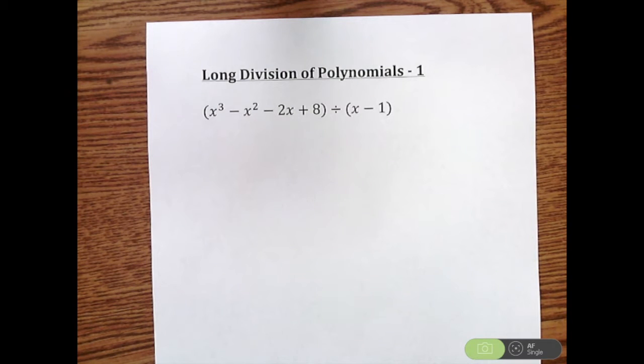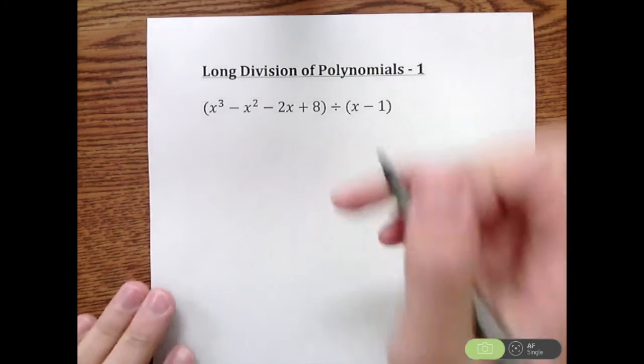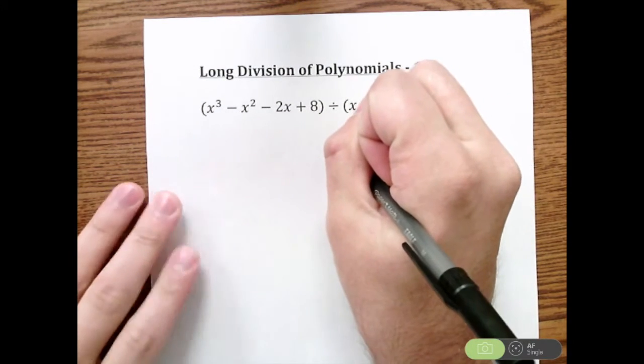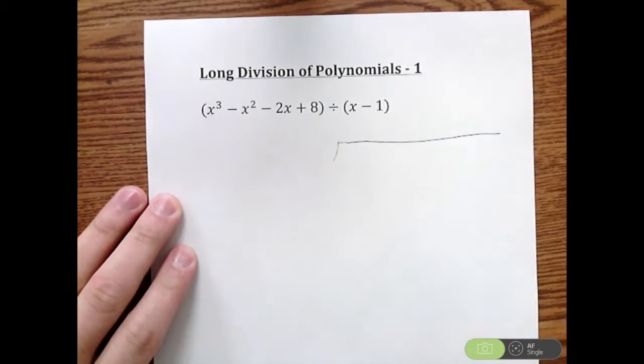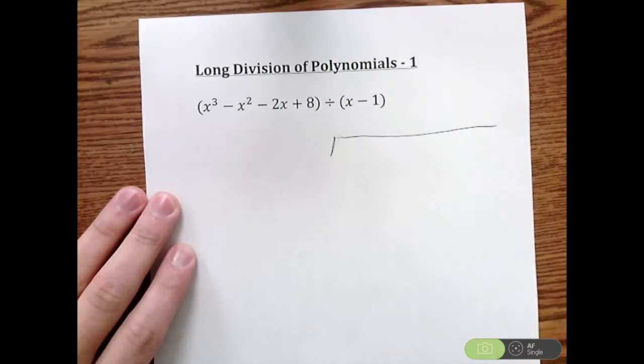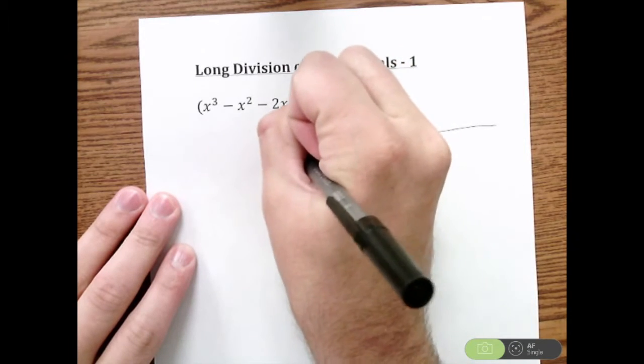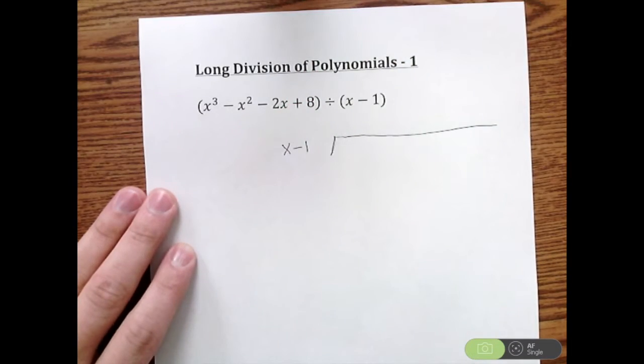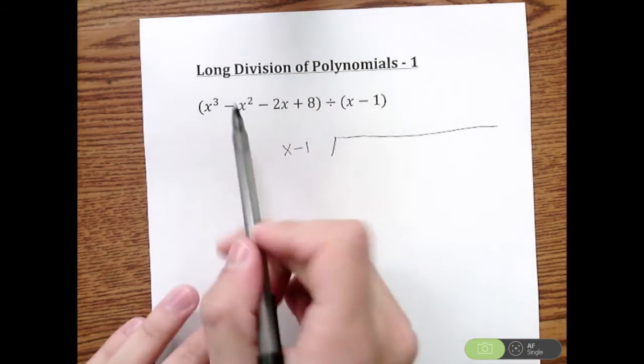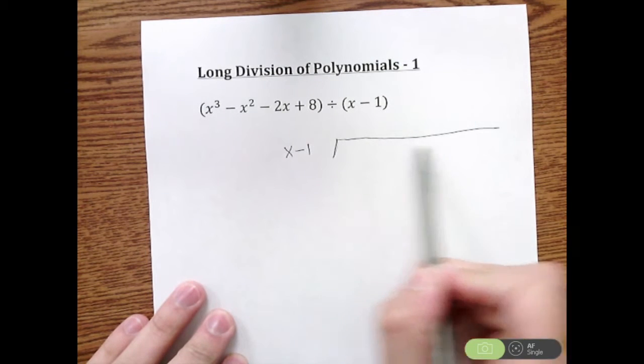In this tutorial I'm going to review how to do long division of polynomials. I'm going to set it up in long division. We're dividing by X minus 1, so that's going to be on the outside, and this polynomial here is going to go on the inside.